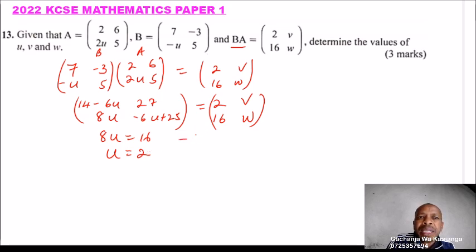So we have already identified U. We can now get W and say minus 6 multiplied by 2, which is U, this equals that, plus 25 equals W. W equals 25 minus 12, that is minus 6 plus 2, and W will be 13.